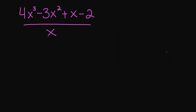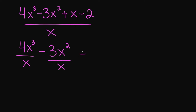Let's look at this example. We're dividing a polynomial by a monomial, so I'm going to divide each term by the monomial. So we have 4x cubed divided by x, minus 3x squared divided by x, plus x divided by x, and then negative 2 divided by x.